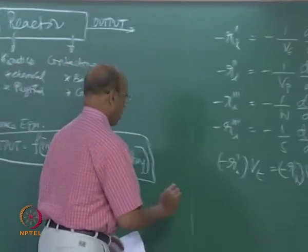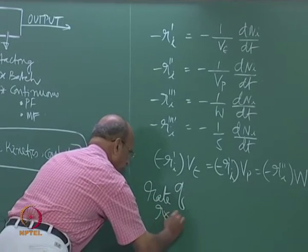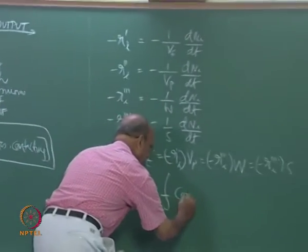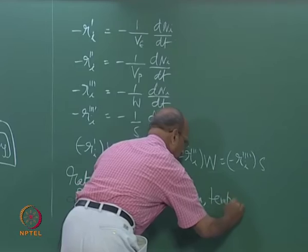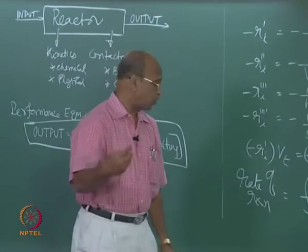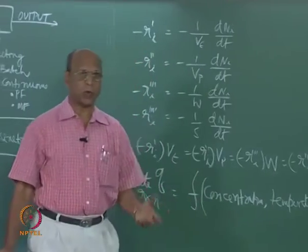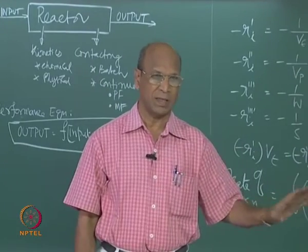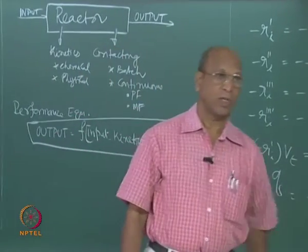Unless you have clarity here, you will make many mistakes in defining rate itself, which is the basic parameter for our design expression. It gives kinetics and indirectly gives the rate of reaction. Our conclusion is that rate of reaction is a function of concentration and temperature. If it is heterogeneous reactions, the concentration term will be a function of both physical kinetics and chemical kinetics — we will derive one or two equations for heterogeneous reactions once we understand the basic reactors.